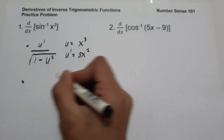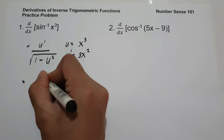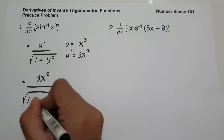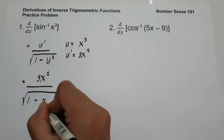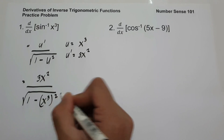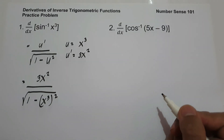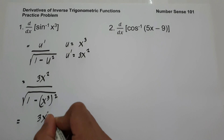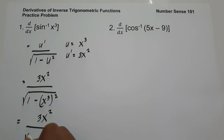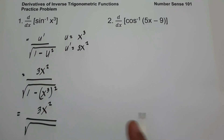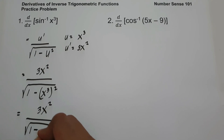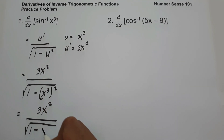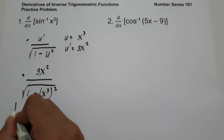So to simplify, we have u' that is 3x squared over square root of 1 minus u, that's x cubed, raised to 2. And to write our final answer, we are going to have 3x squared over square root of 1 minus x cubed raised to 2, that is x raised to 6. And this will be our answer.